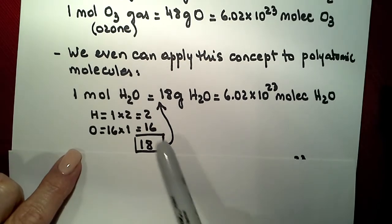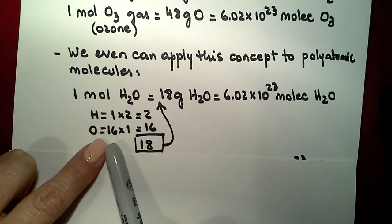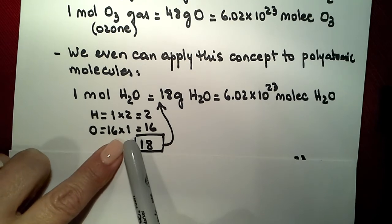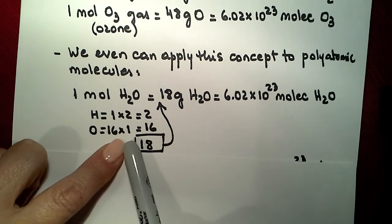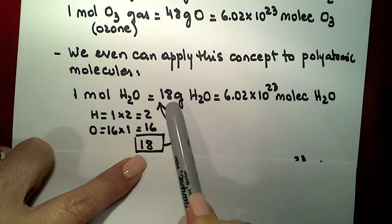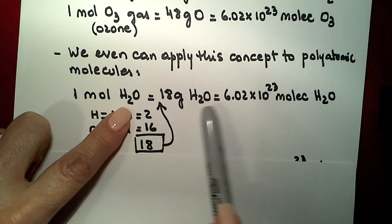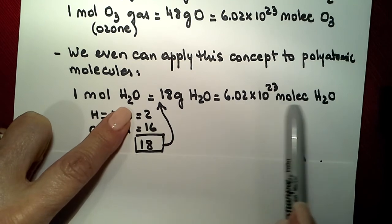So, rule of thumb, you get all the elements that you have, you take the masses in the periodic table, you multiply them by the amount of times that appears in the formula, and you add up all the masses. That is going to be the mass of one mole of molecules. So, it is going to be 6.02 times 10 to the 23rd molecules.